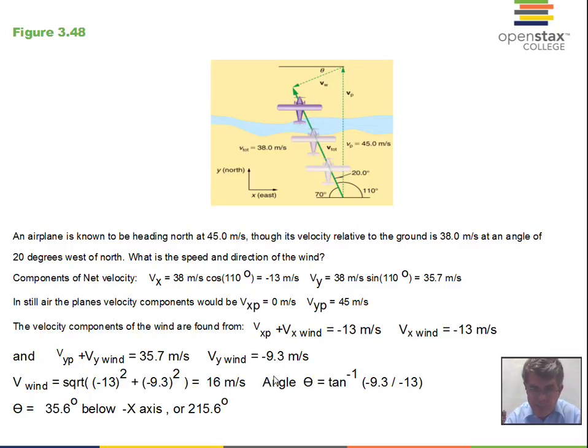For the angle theta: the opposite side is the y component of the wind velocity, the adjacent side is the x component. We do opposite divided by adjacent: -9.3 divided by -13. Taking inverse tangent, we get 35.6 degrees in this triangle.